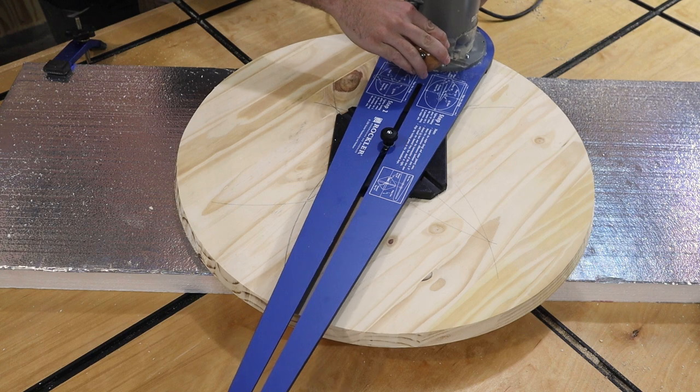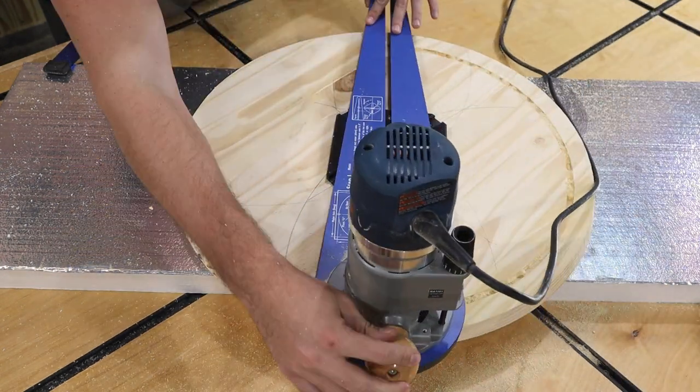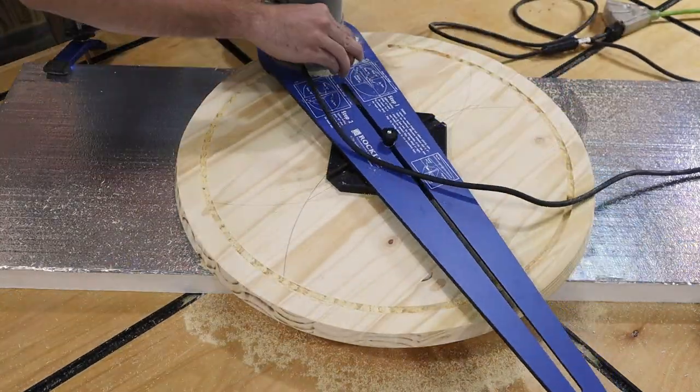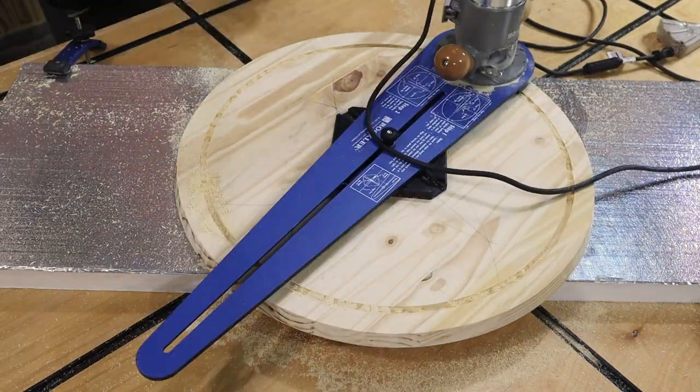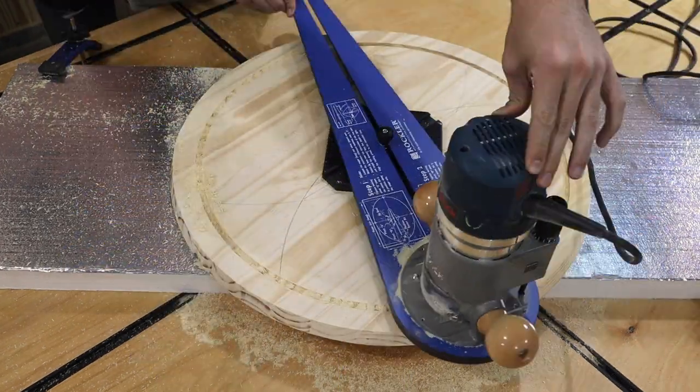With my router mounted to my jig, I started cutting a quarter inch down every pass until I was all the way through. Now, you could cut these circles out using a jigsaw, but if you have a router, I highly recommend using a circle jig because it's fast, easy, and makes a perfect circle every time.